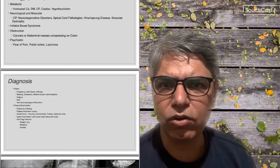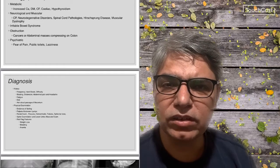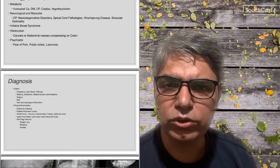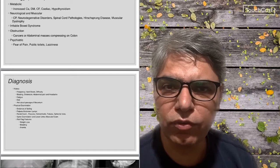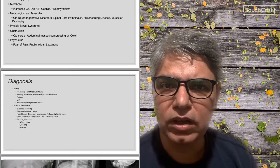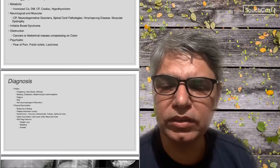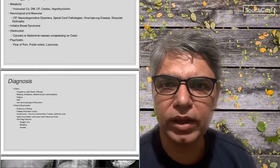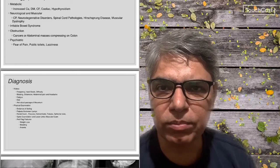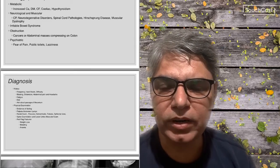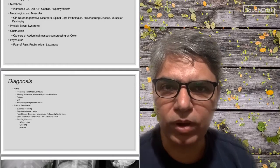If you see a tuft of hairs on the spine or a sacral dimple, you should think of distal spinal cord pathologies. Some red flags that should never be missed with constipation are history of weight loss, bleeding, and anemia, because these could be signs of an occult cancer somewhere in the bowel or abdomen.